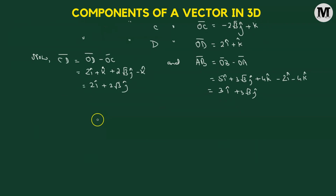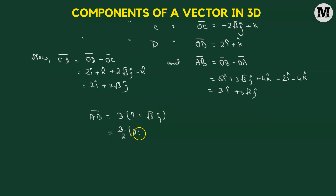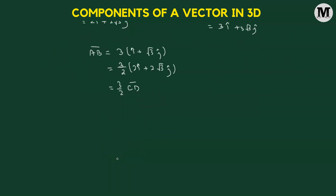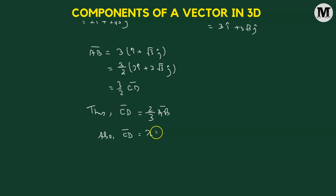Let us rewrite AB vector. Taking 3 as a common factor gives i cap plus square root of 3 j cap. Multiplying and dividing by 2, we get three over two multiplied by 2i cap plus 2 times square root of 3 j cap. Since 2i cap plus 2 times square root of 3 j cap is the vector CD, we have AB vector equals three over two times CD vector, or equivalently CD vector equals two-thirds of AB vector. Since CD equals a scalar multiple of AB with lambda equal to two-thirds, CD is parallel to AB. Hence proved.